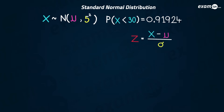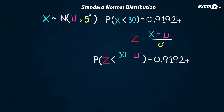We start by standardizing. Wherever it said x, we write z, so instead of P(x < 30) we write P(z < something). We standardize the 30: it becomes (30 − μ) / 5. Now it's in terms of z, which has a standard normal distribution with mean 0 and standard deviation 1. With the original question we couldn't use the calculator because mu was unknown, but now we can because we know the mean and standard deviation of z.